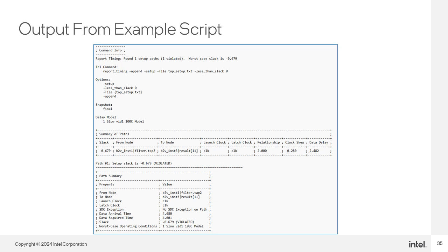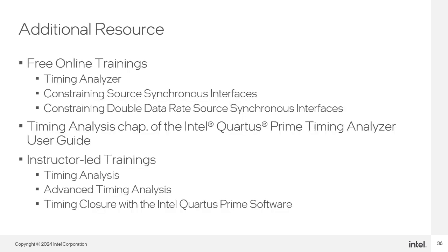If you run the script and there are failing paths in your design, your output file will show the report_timing command returning failing setup paths with negative slack — for example, a slack of -0.679 nanoseconds between specific entities. Scrolling down shows detailed path information with delays for each interconnect and cell. Timing analysis along with SDC and Timing Analyzer is a large topic. To fully utilize Tickle packages to properly constrain your design, run detailed timing reports, and close timing, consult the Timing Analyzer online training, the Intel Quartus Prime Timing Analyzer User Guide, or attend one of the timing analysis instructor-led trainings.